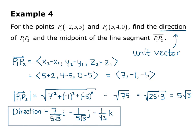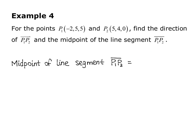The second part of the problem says find the midpoint of the line segment. So remember the midpoint of the line segment P1 P2 has the formula where you add each corresponding component and divide by 2. So I have negative 2 plus 5 divided by 2, 5 plus 4 divided by 2, and 5 plus 0 divided by 2.